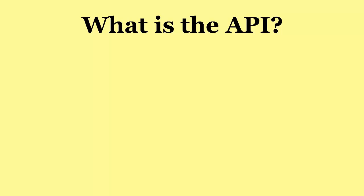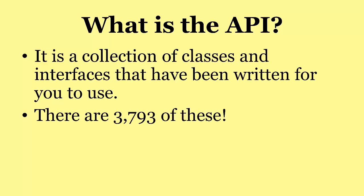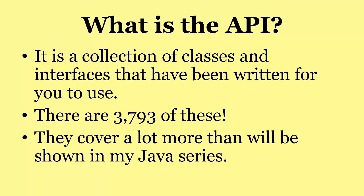What is the API? Well, it's a collection of classes and interfaces that have been written for you to use, and they cover a whole range of topics — things that make your life as a Java programmer a lot easier. There are 3,793 of these, an awful lot, and they cover a lot more than will be shown in my Java series. I will not be going through all 3,793 of them.